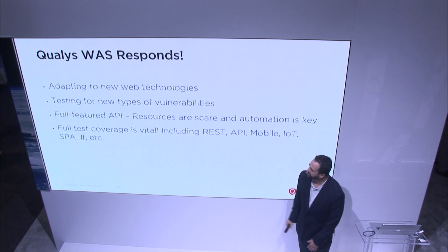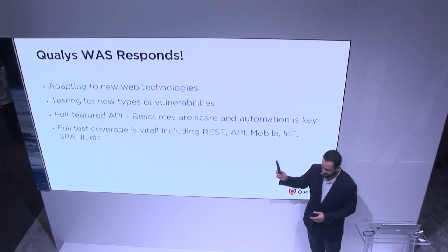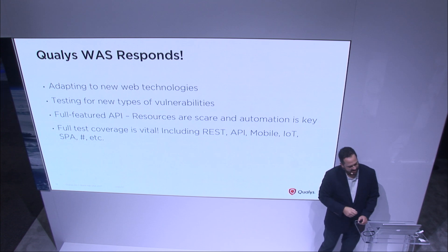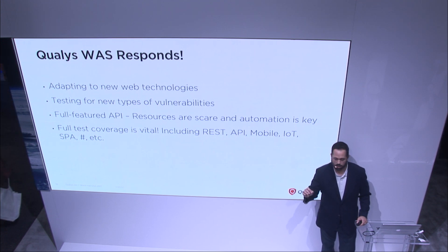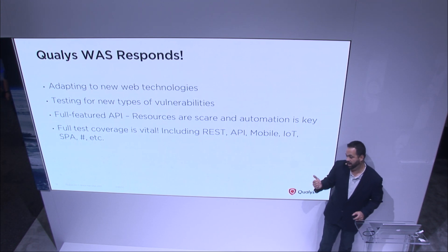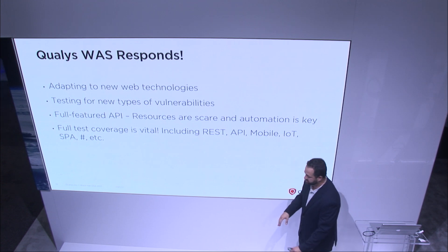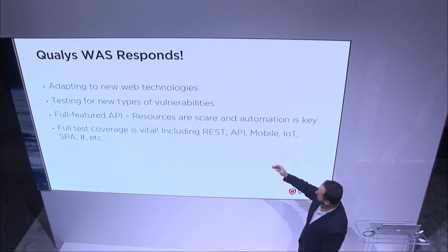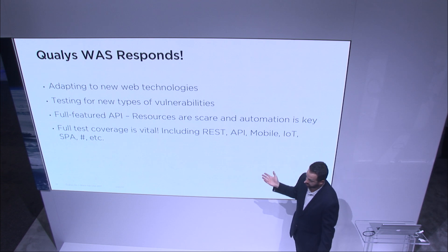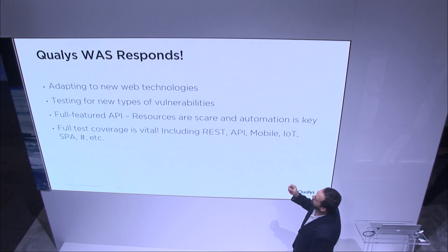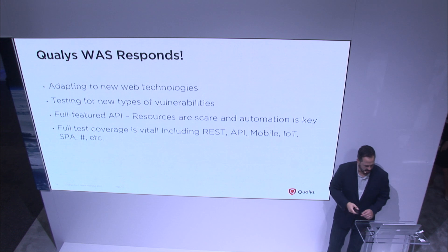Full testing coverage is vital. We're looking at REST, API, mobile, IoT, single-page apps, et cetera. If you have multiple technologies and ignore one that you don't have coverage for, it opens you up. A lot of people will say their mobile apps or IoT is tested — that's wonderful. But I'm still going to find a vulnerability on the API that it calls to deliver content to your phone or any other device, and you can essentially control all of those endpoints, not just the one where you had the vulnerability.